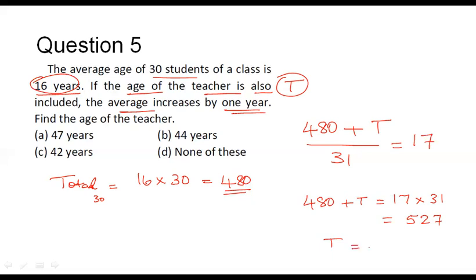So by solving this we will get the value for T that is equal to 527 minus 480, and we can see that this value comes to 47. So we have assumed the age of the teacher to be equal to T and have identified that corresponds to 47. So the age of the teacher is 47 years.